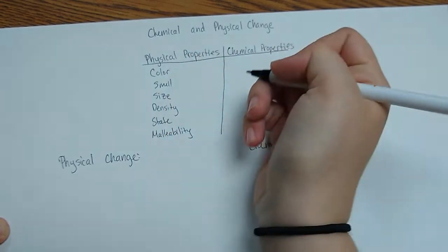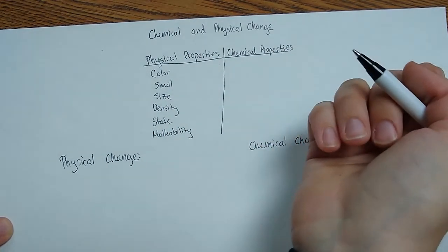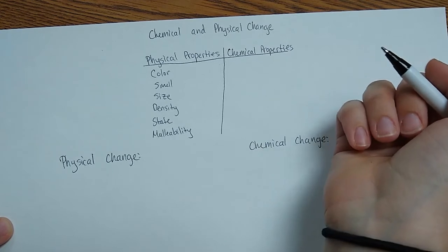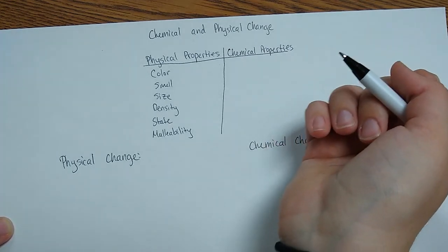Malleability. This is if something can be flattened. So this is an example. Play-Doh is very easy to flatten, while iron is not. It's not very malleable.